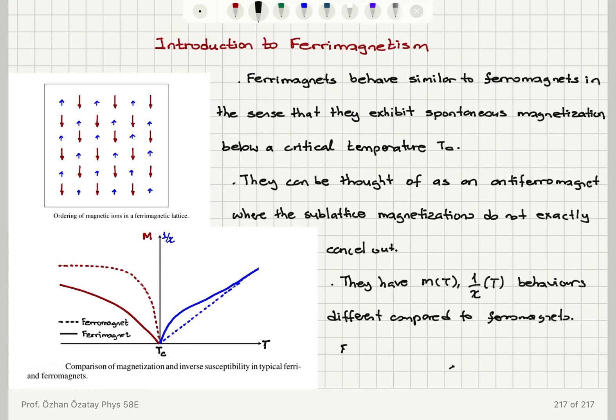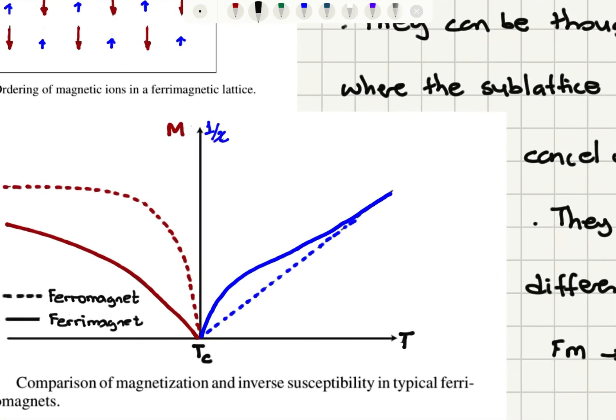For the ferromagnet, remember we have for T greater than Tc, chi is c over T minus theta, Curie-Weiss law. So 1 over chi is proportional to T minus theta. And that's the linear behavior and you can see how this deviates from the ferromagnet behavior.